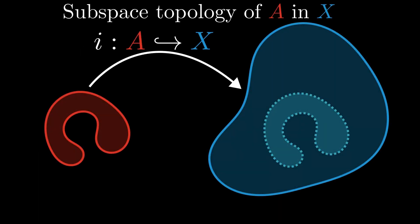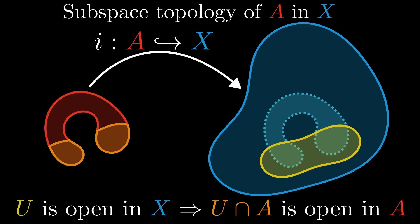First of all, we have the subspace topology. We are given a larger space x and take any subset a. Then the subspace topology on a is the initial topology induced by the inclusion. Here, the preimage of an open set u is the intersection of u with a. So this intersection is open in a.